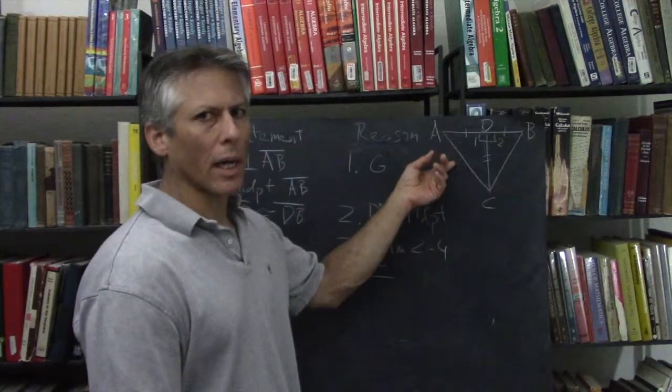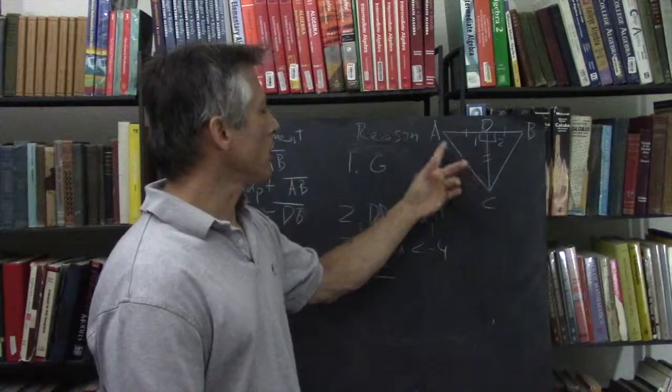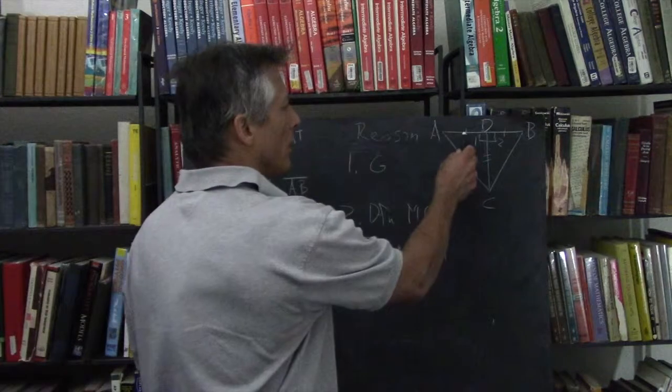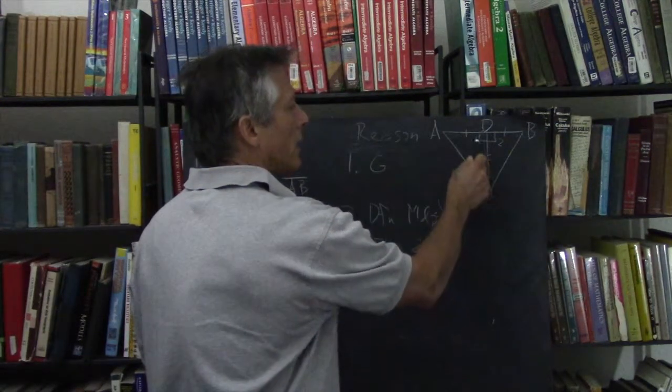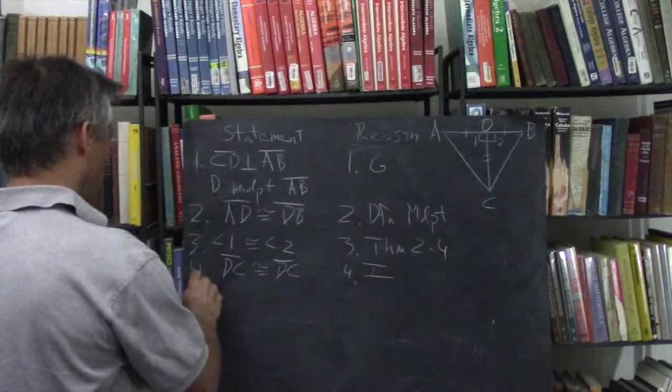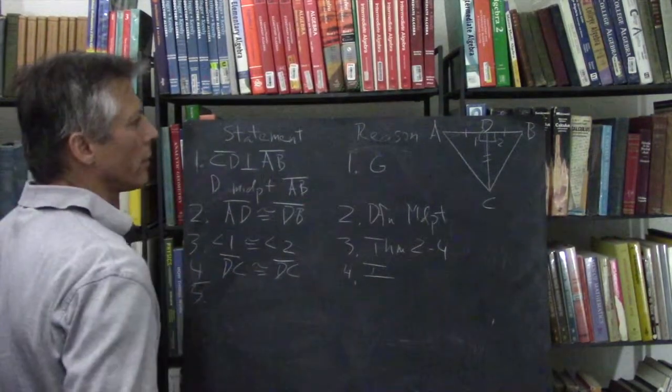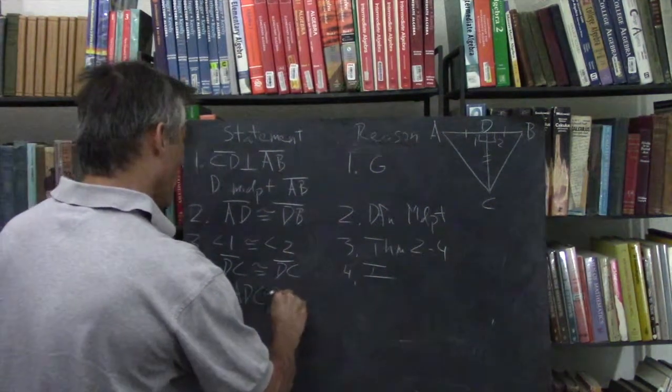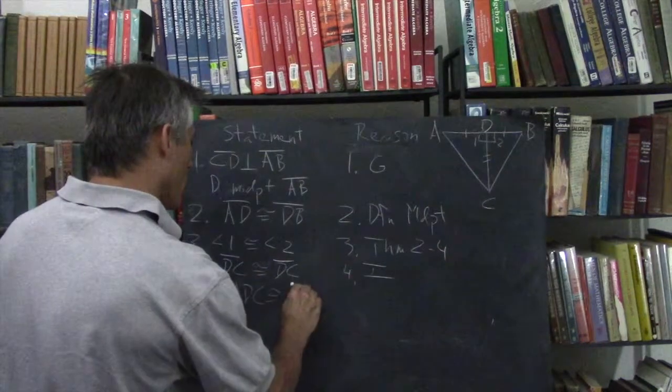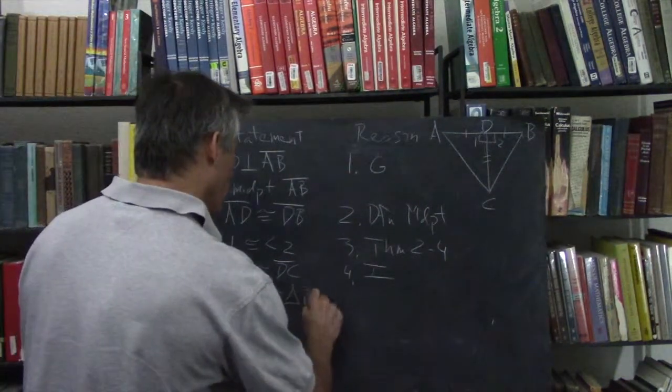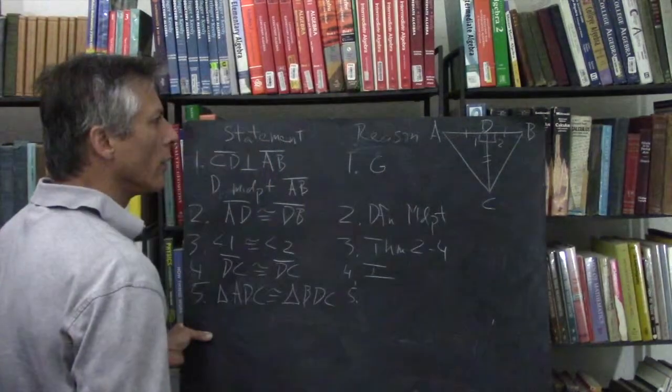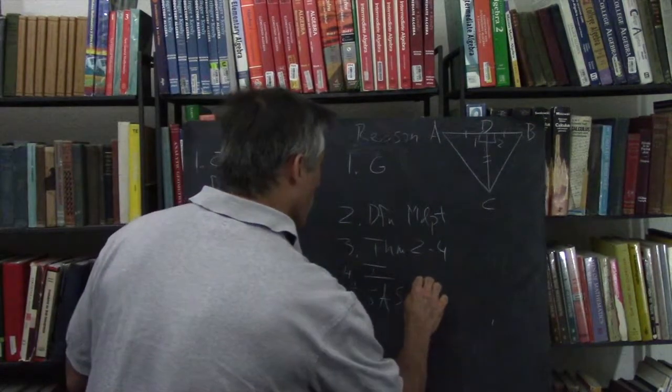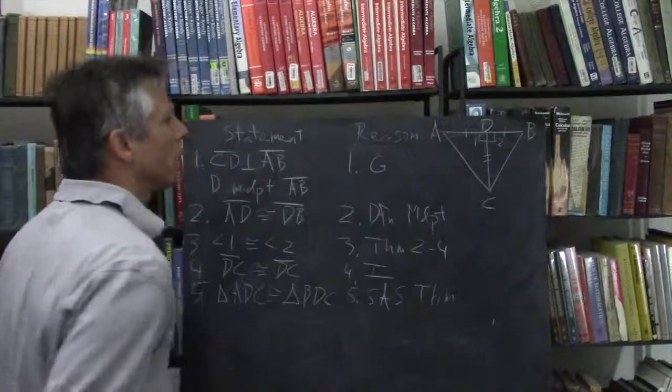which theorem do we have? Is this side, side, side? No. Is it angle, side, angle? No. Is it side, angle, side? Yes. Because we have a side, a side, and the included angle. So, by that theorem, we know triangle ADC is congruent to triangle BDC, and that's the side-angle-side theorem.